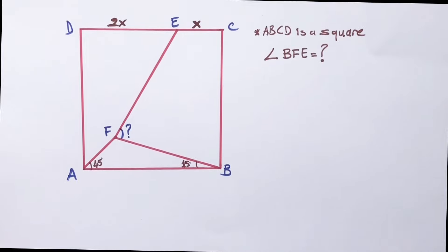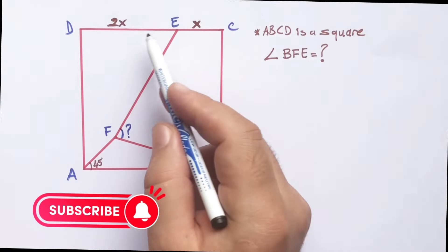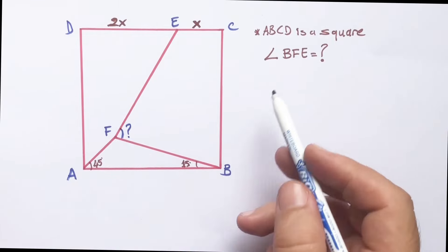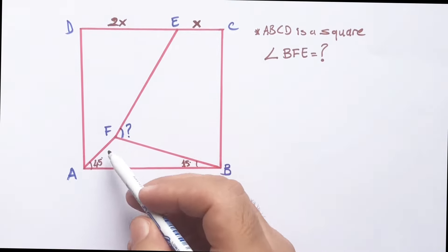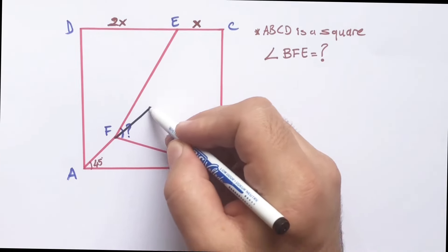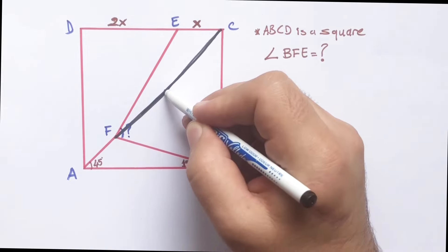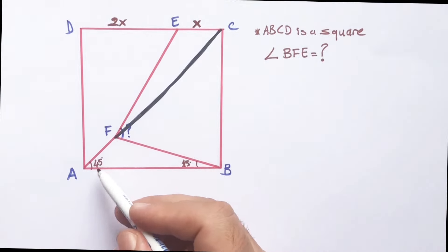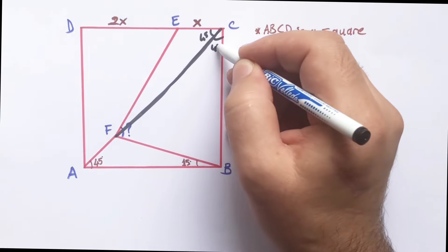Hello everyone. In this video we have one square, and the ratio of these two sides is two. Here is 45 degrees and here is 15 degrees, and we have angle E which is asked. First of all, if we connect F and C points like this, we know that this line must be linear, because AC is a diagonal of the square, so these two angles must be 45 degrees.